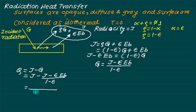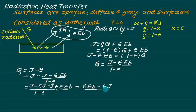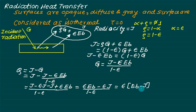Substituting G: Q = J − (J − εEb)/(1 − ε). Cross-multiplying and simplifying, the J terms cancel, leaving Q = ε(Eb − J) / (1 − ε). This can also be written as Q = (Eb − J) / [(1 − ε)/ε].